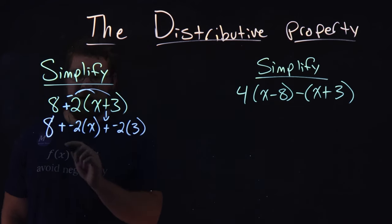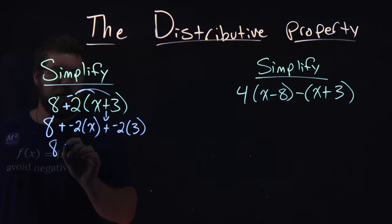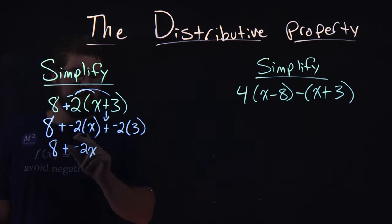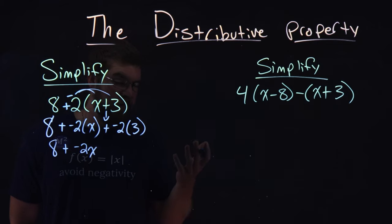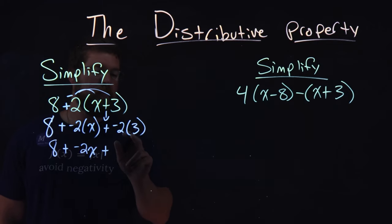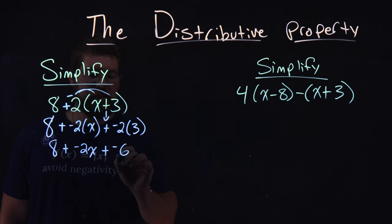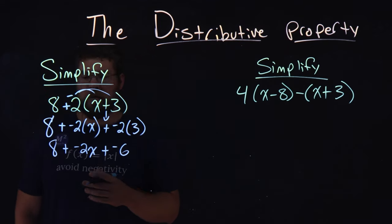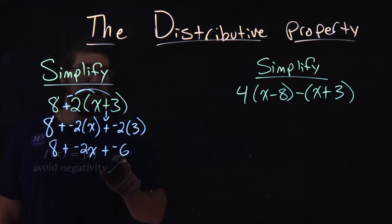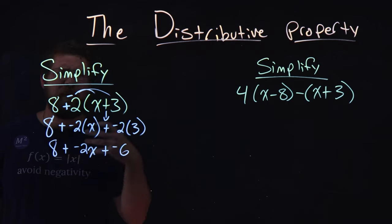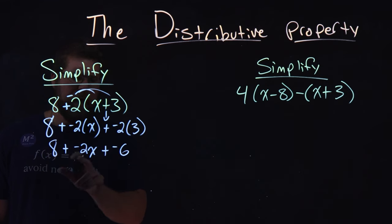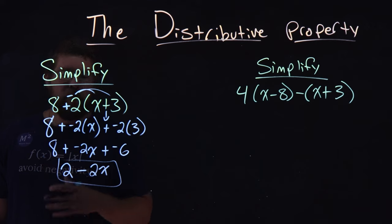Now let's simplify. We have 8 plus negative 2x. Negative 2 times x is negative 2x, and negative 2 times 3 is negative 6. Now we want to combine our like terms. 8 and negative 6 are like terms. 8 plus negative 6 is positive 2. Then we have plus negative 2x, or minus 2x. Our answer simplifies to be 2 minus 2x.